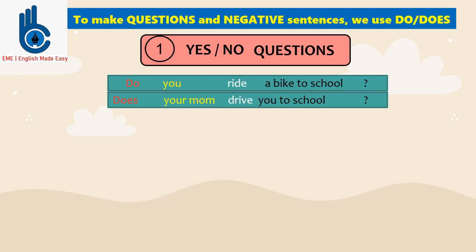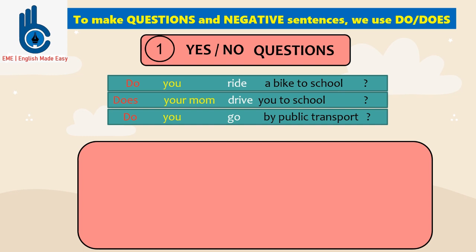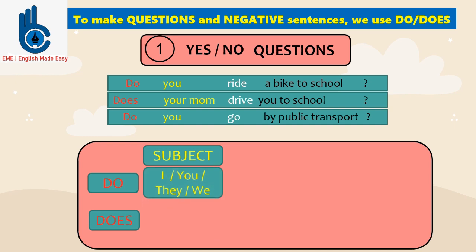Does your mom drive you to school? Do you go by public transport? From all three sentences, we can see they have the same pattern. They all start with do or does, continued by subject. Do is used for subject I, you, they, or we.